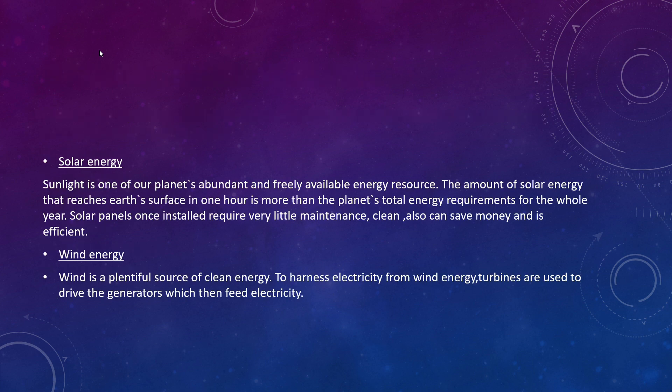Solar energy is the energy we obtain from sunlight. There are two types: one is thermal energy, which lights up our days, heats the earth, our bodies and our homes, and dries our clothes — all for free. The second is electric energy, also obtained from the sun, which uses the power of the sun to produce electricity through solar cells called photovoltaics or solar panels.